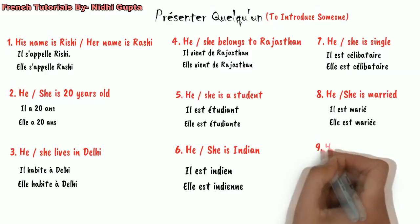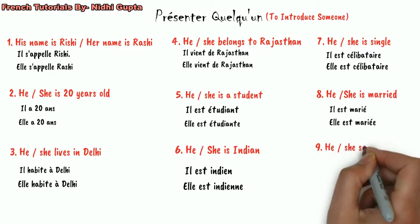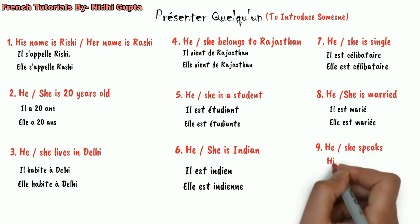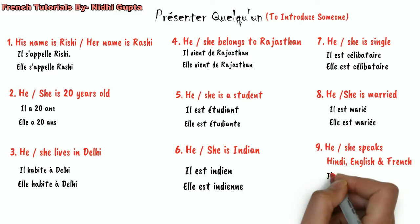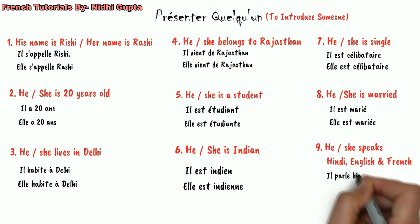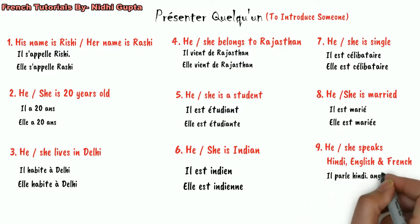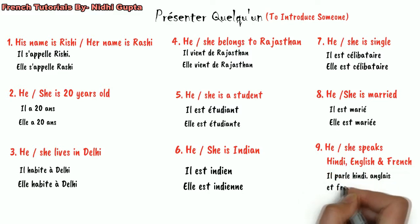For languages, we use 'il parle.' If Rishi speaks multiple languages — maybe Hindi, English, and French — we say 'il parle Hindi, anglais et français.'